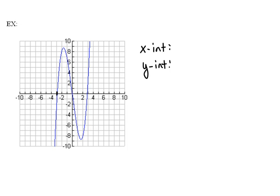So here for our x-intercepts, it looks like it's crossing the x-axis in these three places. So this would be the point negative 3, 0, 0, 0, and also the point 3, 0.